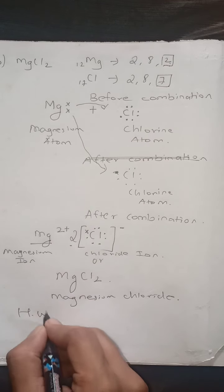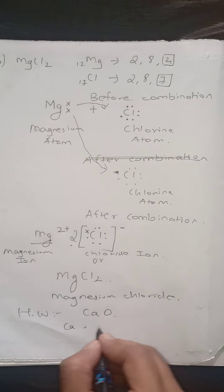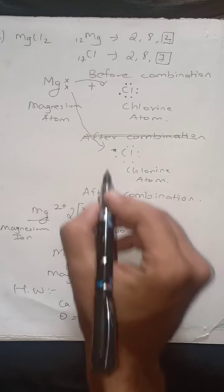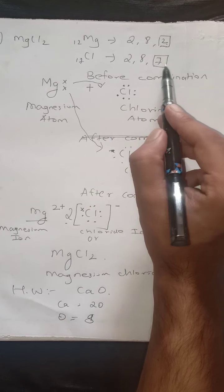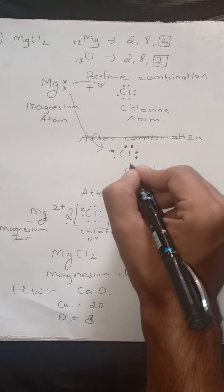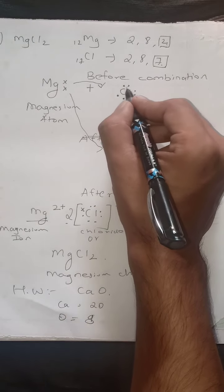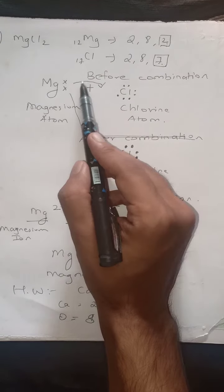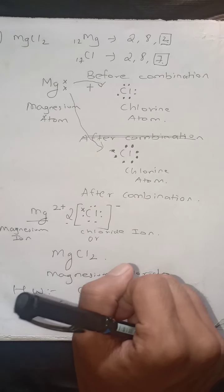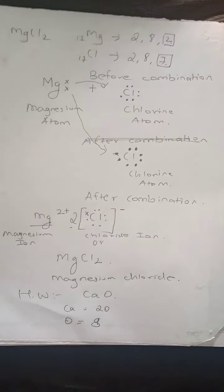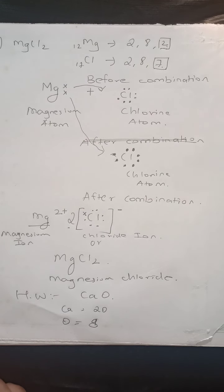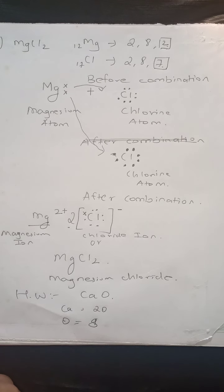Homework: draw the structure for calcium oxide — calcium has atomic number 20 and oxygen has atomic number 8. This was part one of the chemical bonding chapter. In this lecture we have completed the electrovalent/ionic bond. Thank you, students.